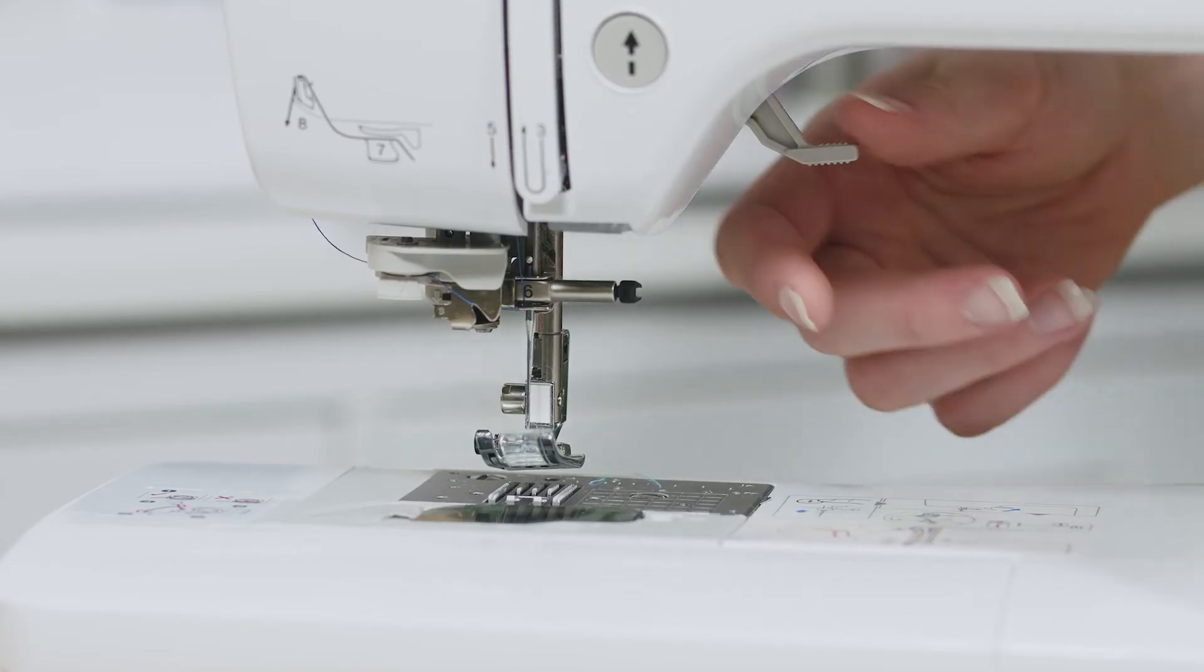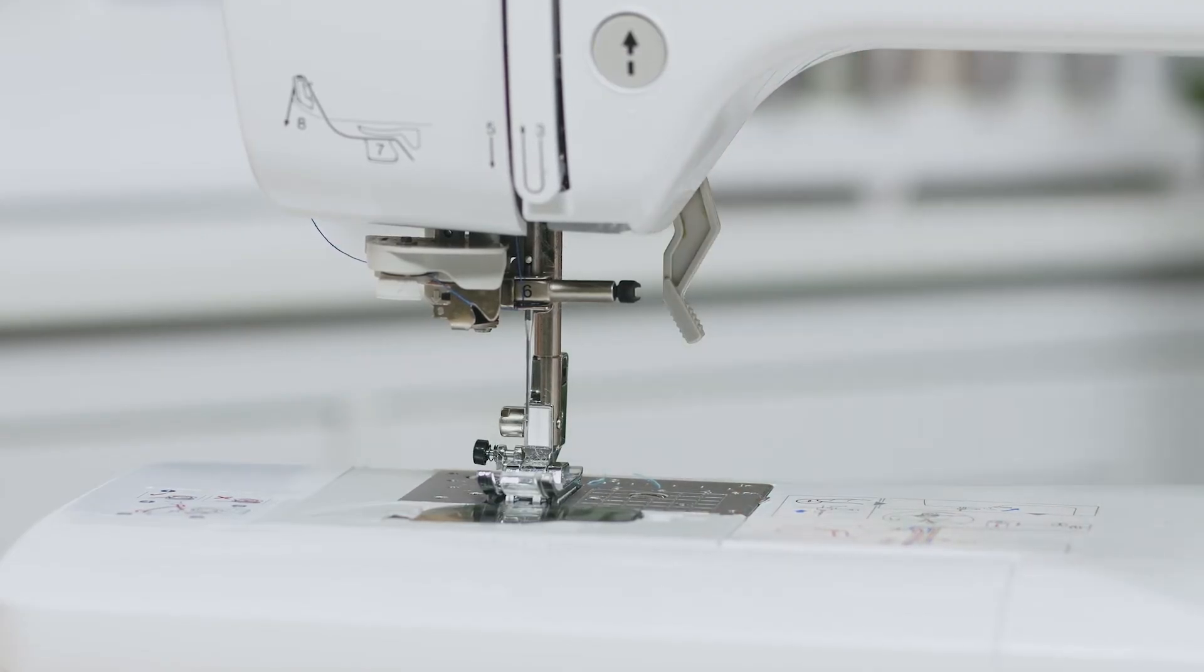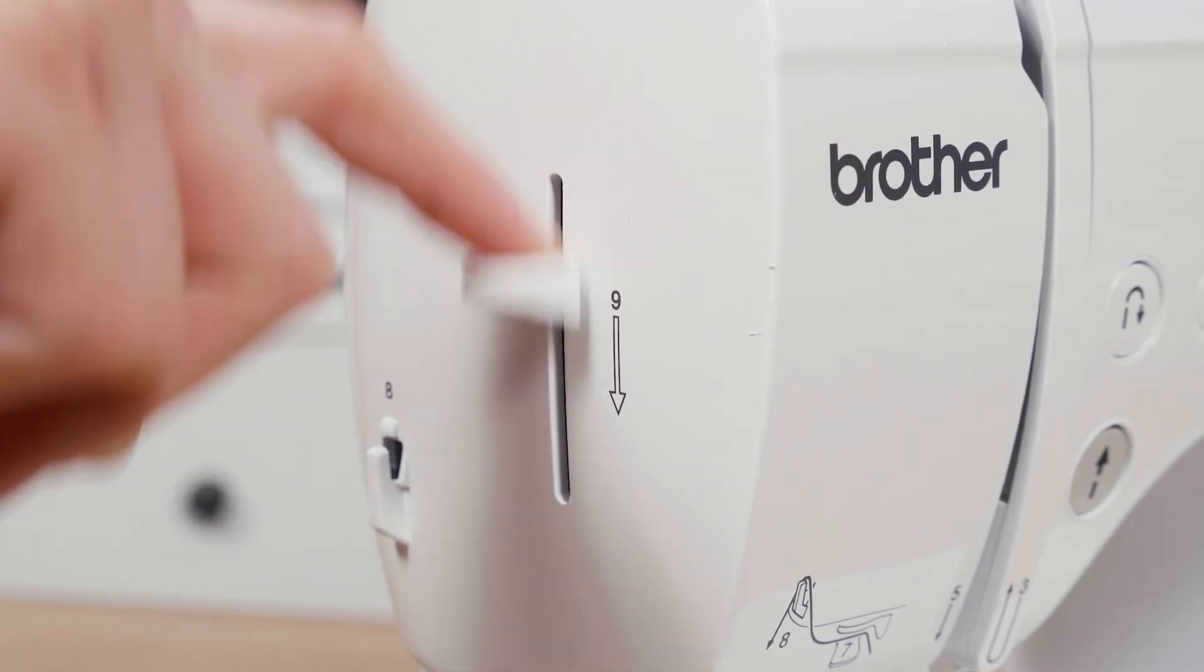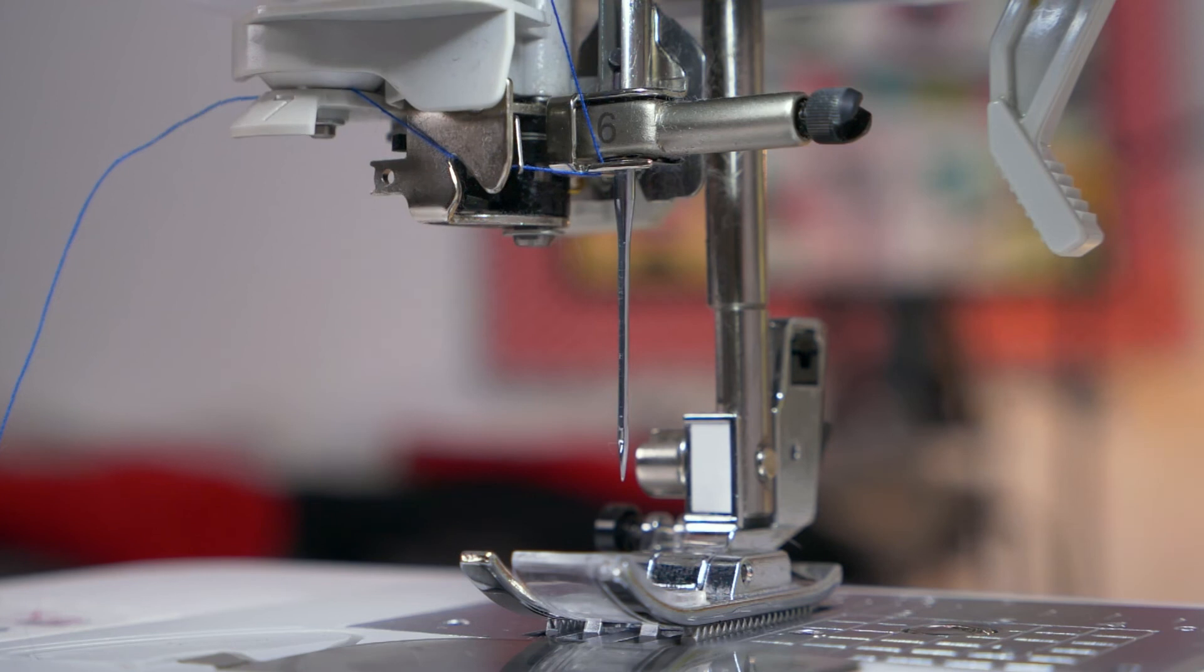Before the final step, lower your presser foot to ensure the needle threader won't hit the foot. Then to thread the needle, engage the auto needle threader by firmly pushing down the lever at step nine on the left side of your machine.